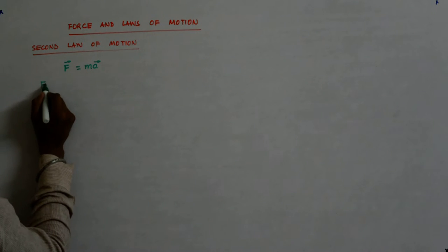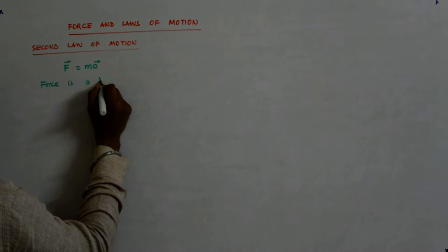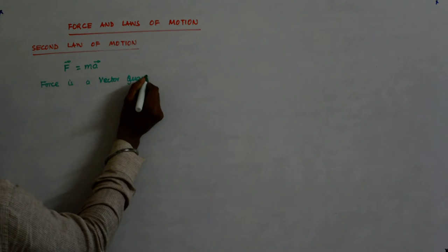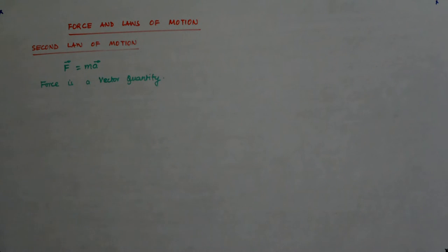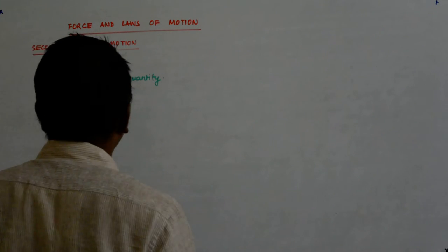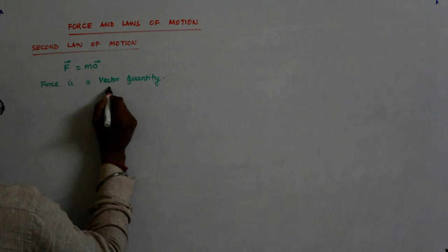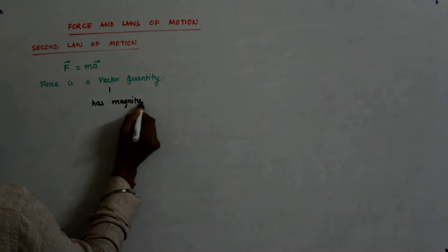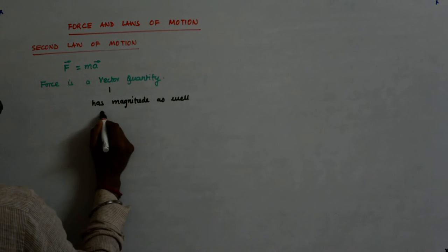So force is actually a vector quantity. It is a vector quantity. What does that mean? It means it has both magnitude as well as direction.